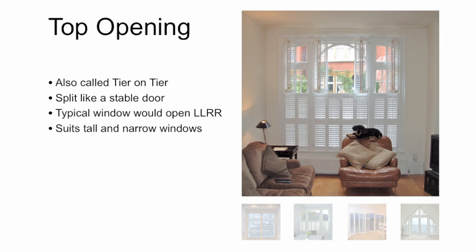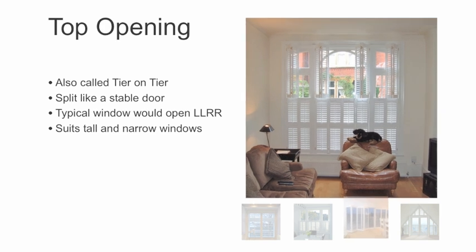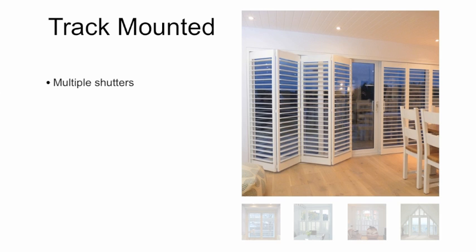This tier on tier design only suits windows that are tall and narrow, like a stable door. If you try to have top opening shutters on a wide window it would look squashed, and you'd end up with lots of rails running across the center of the window and not many louver blades. If you have a patio door or wide window and prefer the shutters to be folded back to one side, then a track mounted option could be the answer.